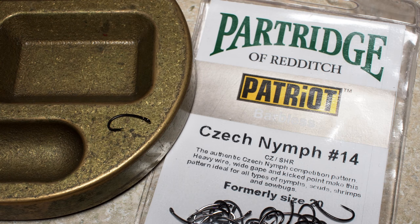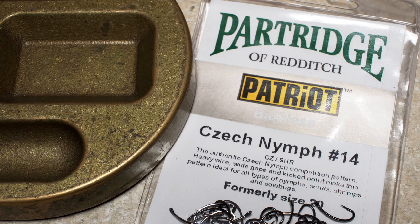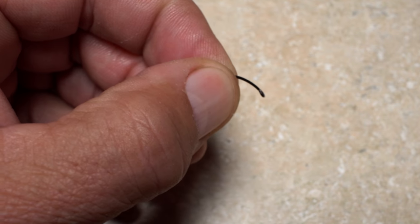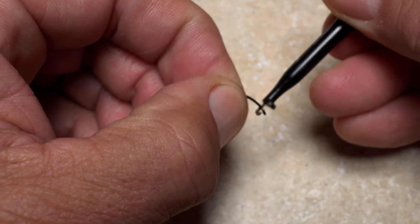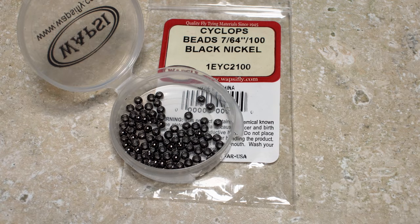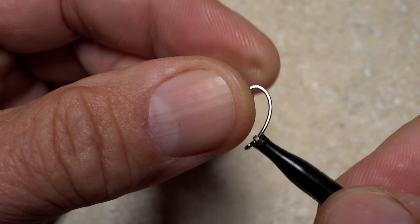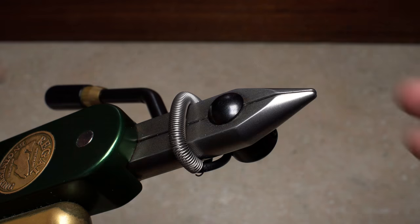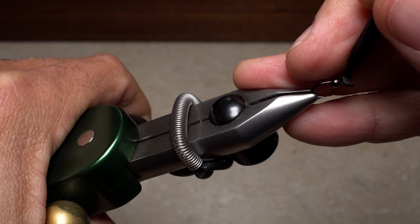I start with a Partridge Heavy Wire Czech Nymph Hook in size 14. Getting hold of the hook with plunger style hackle pliers makes handling easier. Pick up a 7.64 inch black nickel bead and feed it onto the hook small hole first, then get the assembly firmly secured in the jaws of your tying vise.